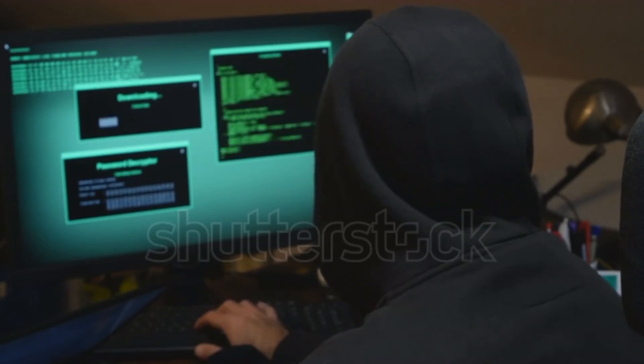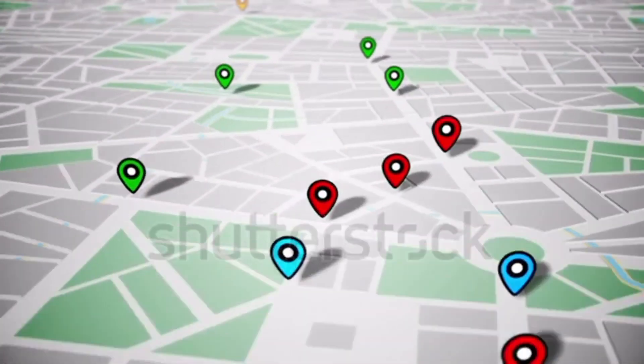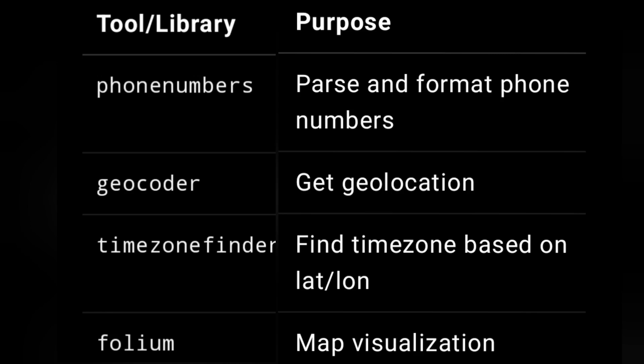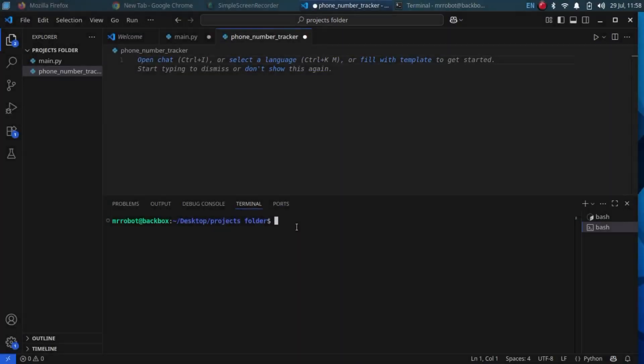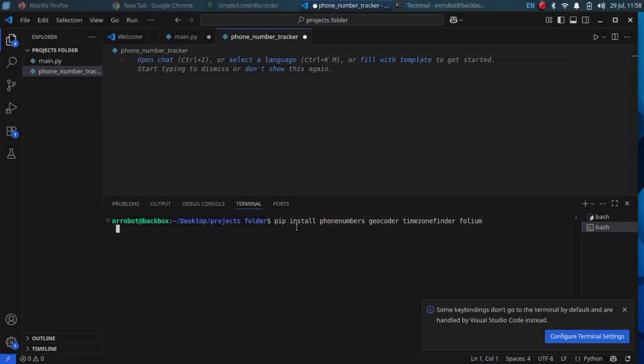This video is for educational purposes only, never to harm anyone. Let's begin. Tools and libraries you'll use: phonenumbers to parse and format phone numbers; geocoder to get location; timezone_finder to find the time zone based on latitude and longitude; and folium for map visualization. Install the required libraries.